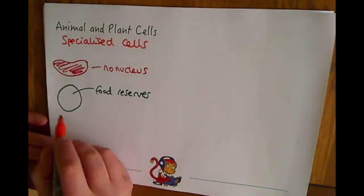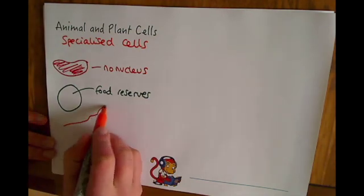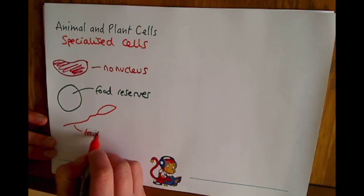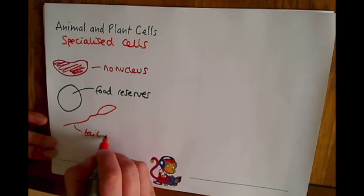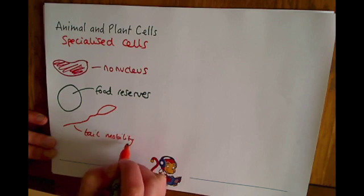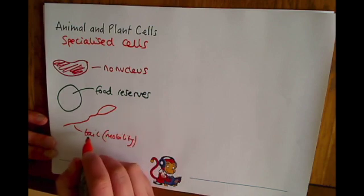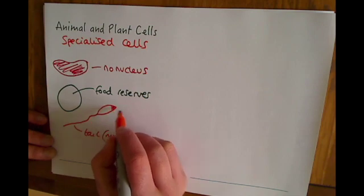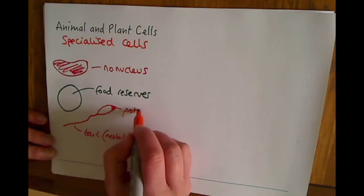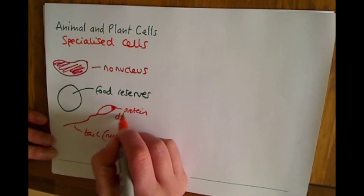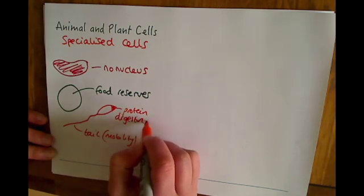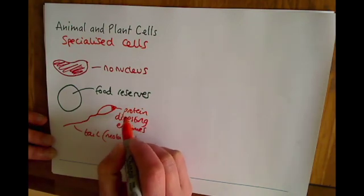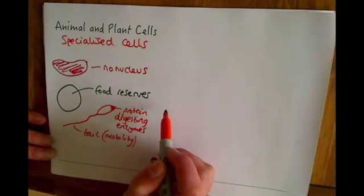And then the sperm cell, which obviously has its tail for mobility, allowing it to move up towards the egg. And also in the head, it has protein digesting enzymes to allow it to enter into the egg.